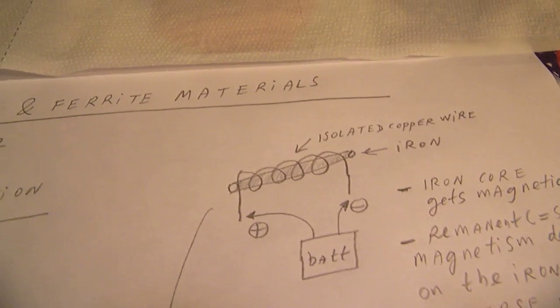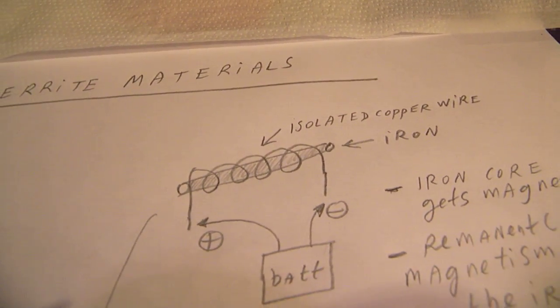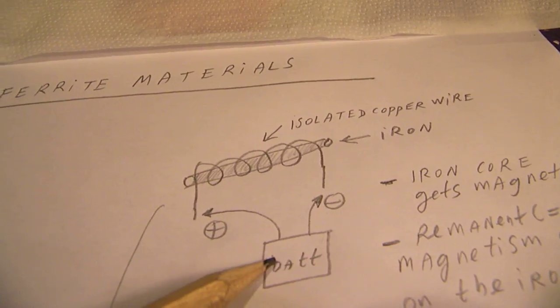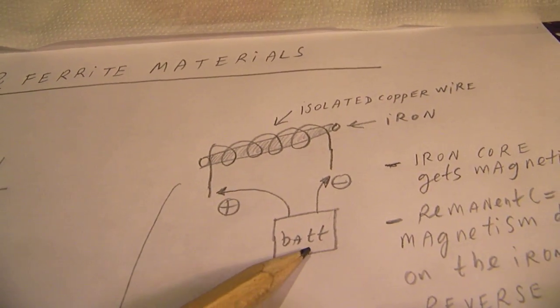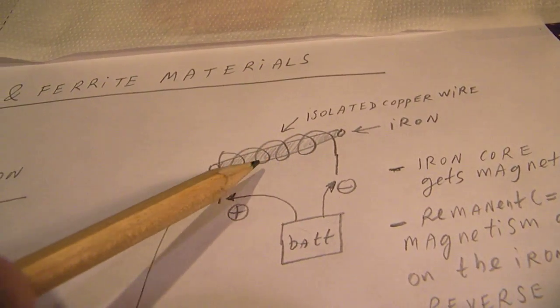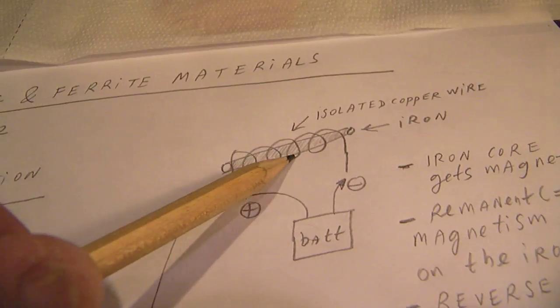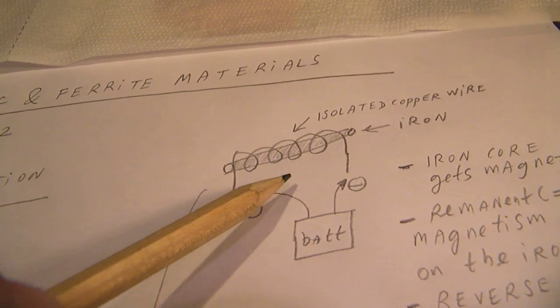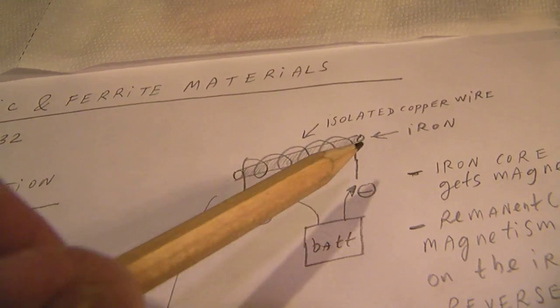Here the basics from magnetism. You have here a battery, here is an iron core, and when we send current via a coil alongside that iron core, the iron gets magnetized. So we have a north pole and a south pole.